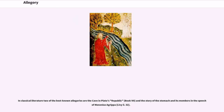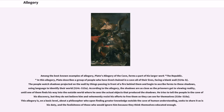In classical literature, two of the best-known allegories are the cave in Plato's Republic, Book VII, and the story of the stomach and its members in the speech of Menenius Agrippa, Livy II. Among the best-known examples of allegory, Plato's allegory of the cave forms a part of his larger work The Republic.